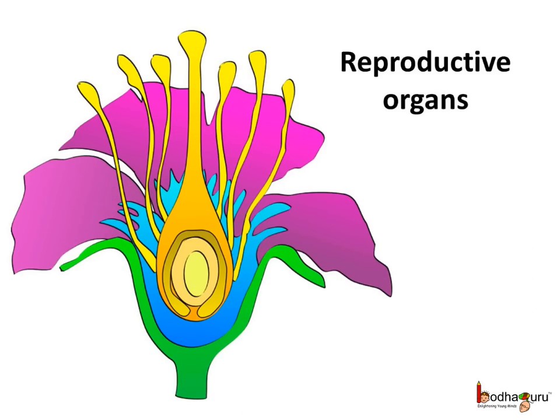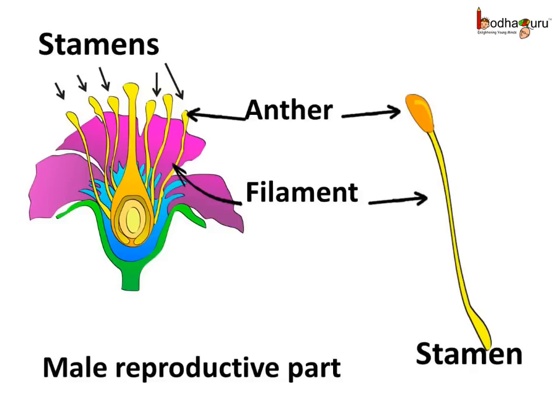If we remove the petals of the flower we would see the reproductive organs inside. First is the stamen — the stamen is called the male reproductive part of the flower. Each stamen is made of a thin stalk called the filament, and a knob-like part on top of the filament called the anther. The anther produces a powdery substance called pollen. So the stamen is the male reproductive part and it consists of the anther and the filament.